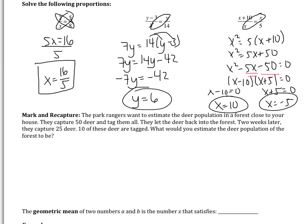We have another proportion example, and this is actually a really interesting example, in my opinion. It's called the mark and recapture method. This method is actually used by scientists to estimate population sizes. It says the park rangers want to estimate the deer population in a forest close to your house. They capture 50 deer and tag them all. So by tag them, it means they put a little tag on like their ankle. They let the deer back into the forest. Two weeks later, they capture 25 deer. 10 of these are tagged. What would you estimate the deer population of the forest to be?